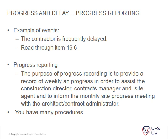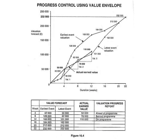Then progress reporting. The purpose of progress recording is to provide a record of weekly progress in order to assist the construction director, contracts manager, and the site agent, and to inform the monthly site progress meeting with the architect and his administrator — basically to keep track of what's going on. There are many procedures to assist you in this, and in this chapter you can easily see the diagram that's included here.